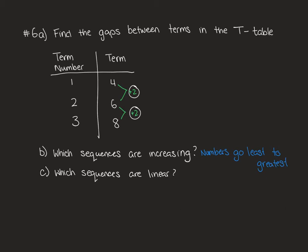Question C is going to ask you which sequences are linear. To tell this you would look at the gap, and if the gap is the same it's linear. We could go, oh yeah the gap is plus 2 for both of these. So this is also a linear sequence.